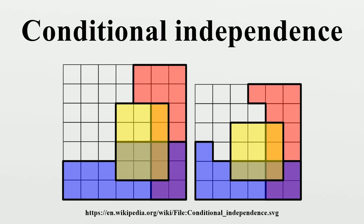In particular, if a large number of the X's are observed to be equal to 1, that would imply a high conditional probability — given that observation — that P is near 1, and thus a high conditional probability, given that observation, that the next X to be observed will be equal to 1.